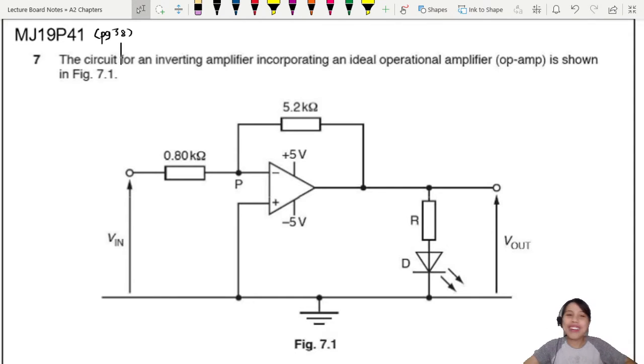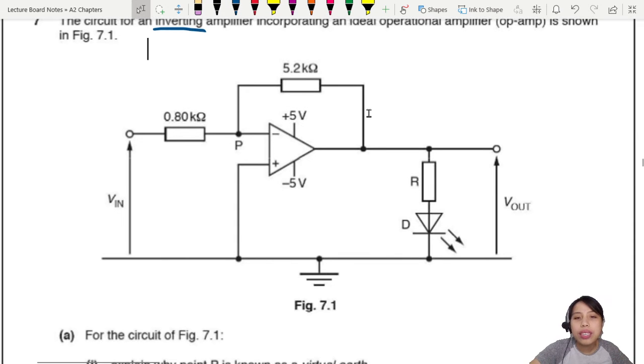MJ19 P41 Q7, the circuit for an inverting amplifier incorporating an ideal op-amp is shown. You can see how you know it's inverting - from Vin potential all the way to Vout, you don't go to actual ground, you just go through virtual ground.